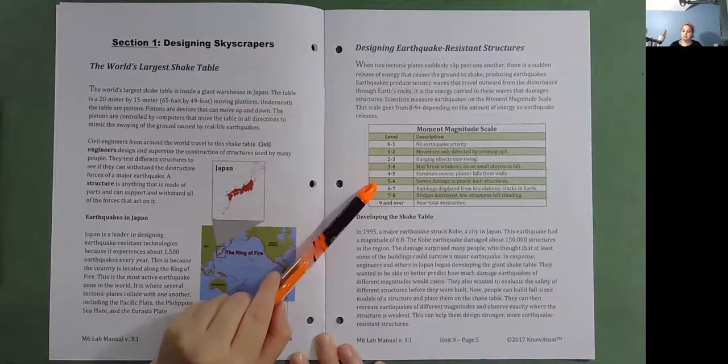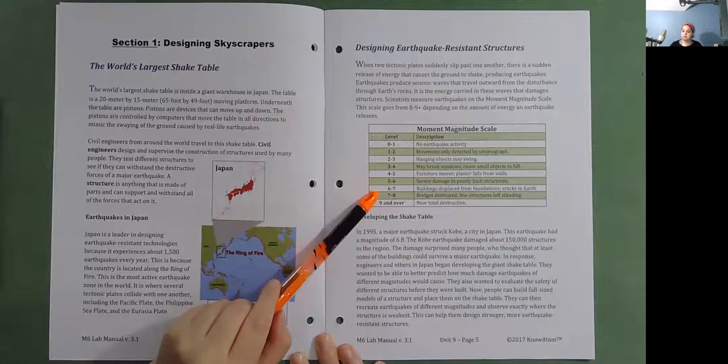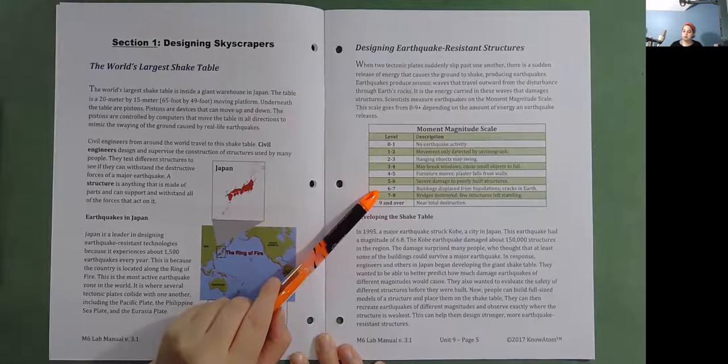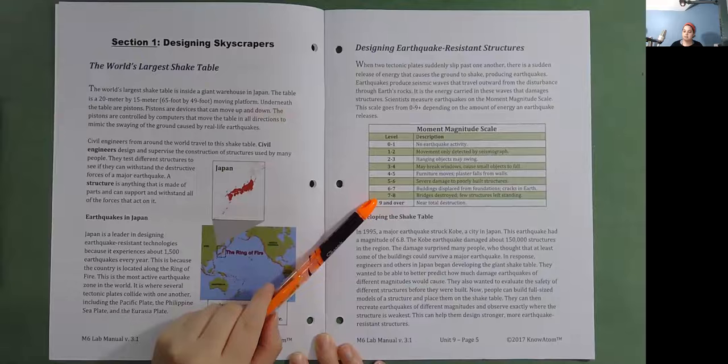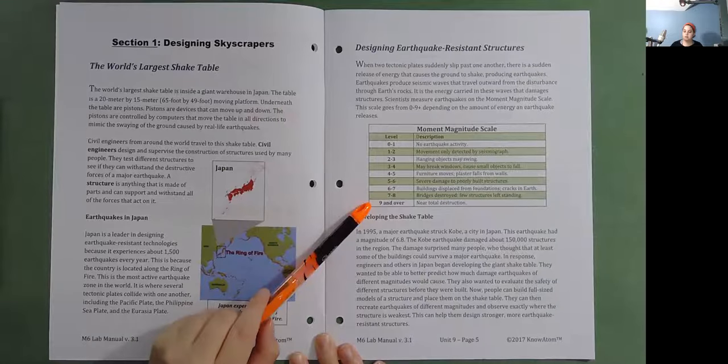Level 5 to 6: Severe damage to poorly built structures. Level 6 to 7: Buildings displaced from foundations, cracks in earth. Level 7 to 8: Bridges destroyed, few structures left standing. 9 and over: Near total destruction.